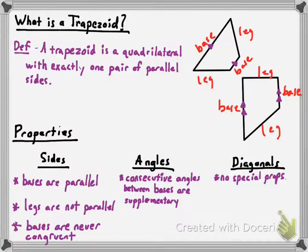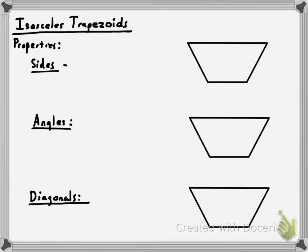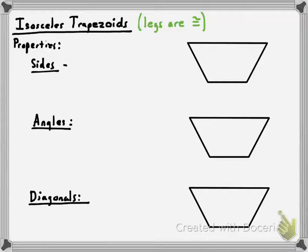You can have a special kind of trapezoid — just like we were able to have special types of parallelograms — and that special kind is called an isosceles trapezoid. This is the type most people envision when thinking about trapezoids. An isosceles trapezoid is a trapezoid that has two congruent sides, specifically the legs. I told you bases can never be congruent in a trapezoid, but when the legs are congruent, you've got an isosceles trapezoid.